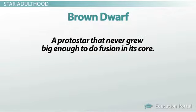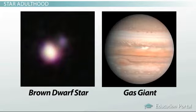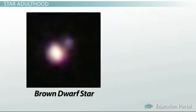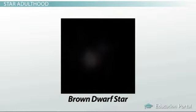A brown dwarf is a protostar that never grew big enough to do fusion in its core. Brown dwarfs are heavier than our gas giant planets, but not big enough to be a star. The brown dwarf cools down over billions of years until it is the temperature of the rest of the universe and fades into the background.